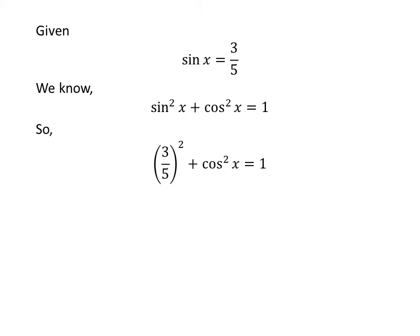Plugging the given value of sin in the above identity gives us square of 3 upon 5 plus square of cosine of x is equal to 1.